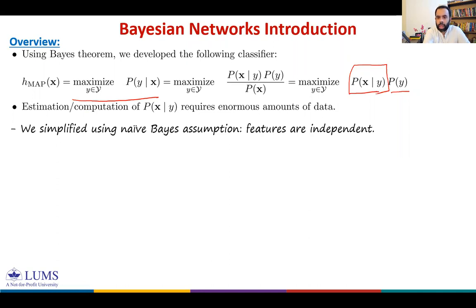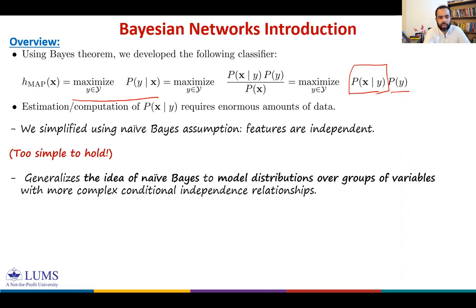Although the naive Bayes assumption works very well in practice, it is too simple to hold in general. Bayesian networks generalize the idea of naive Bayes to model distributions over groups of variables with more complex conditional independence relationships.